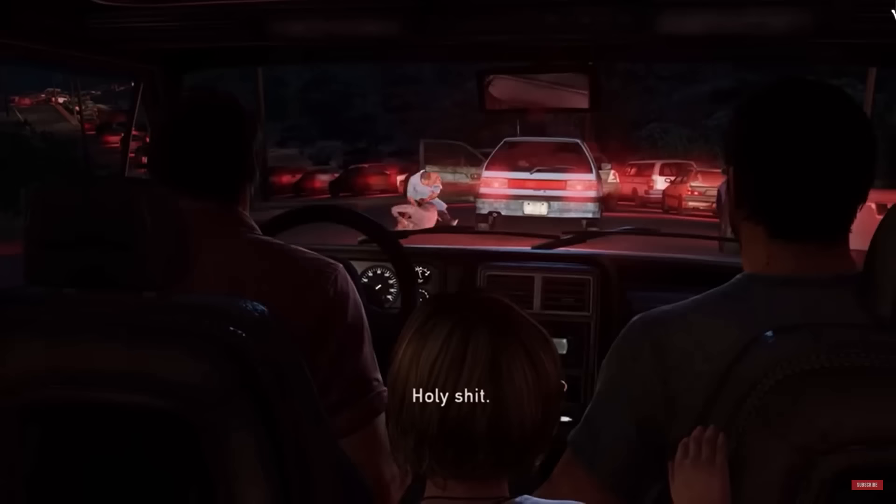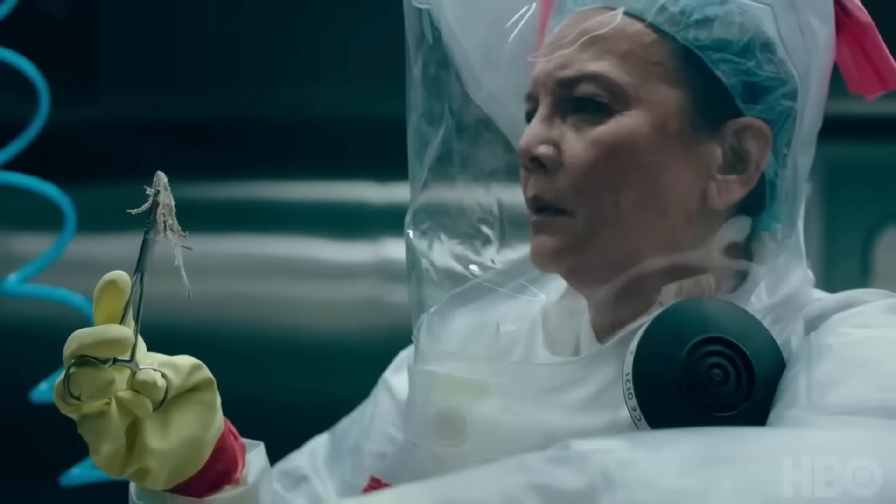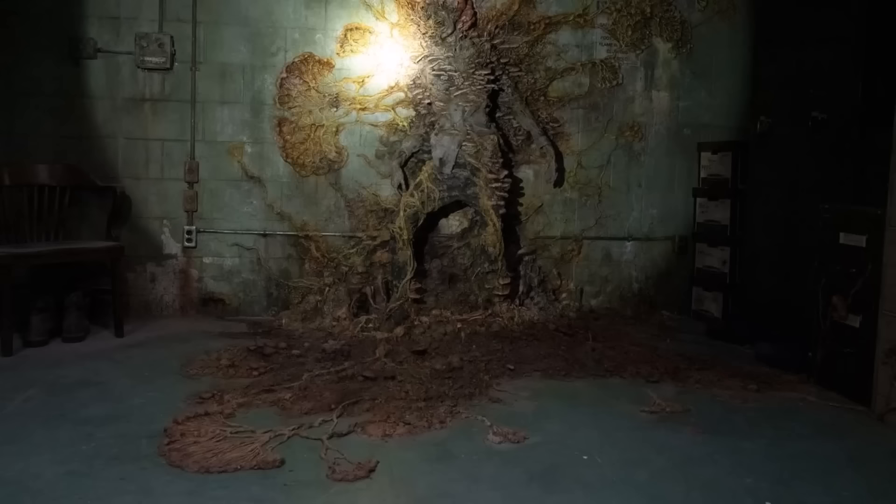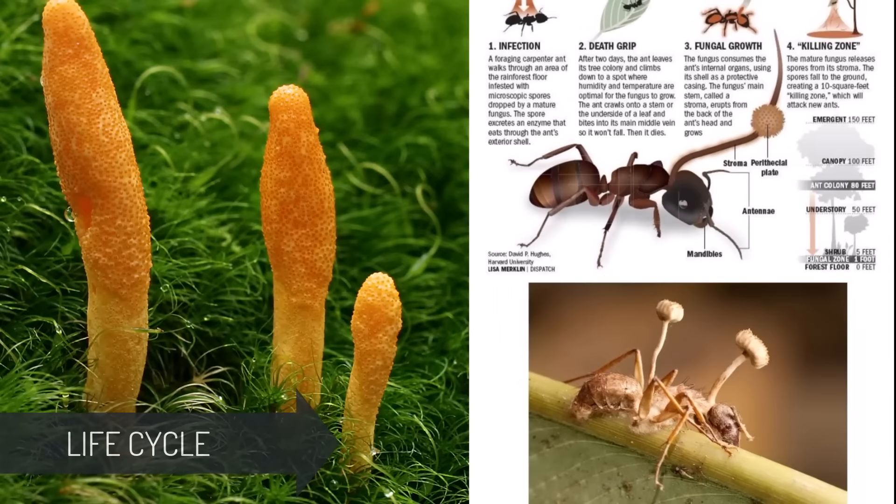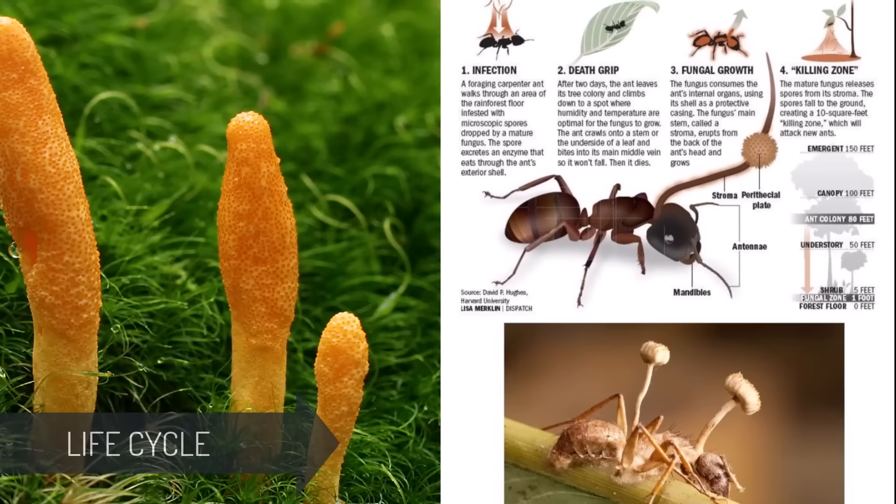Here we are going to showcase the seven types of infected mutant forms of the cordyceps fungi and also their life cycle. In the game, the species originated in South America where it mutated to spread to humans via diseased crops. In the series, however, it was shown that the earliest incident was recorded in Jakarta, Indonesia, on September 3rd, 2003, and then spread quickly worldwide within a matter of weeks.